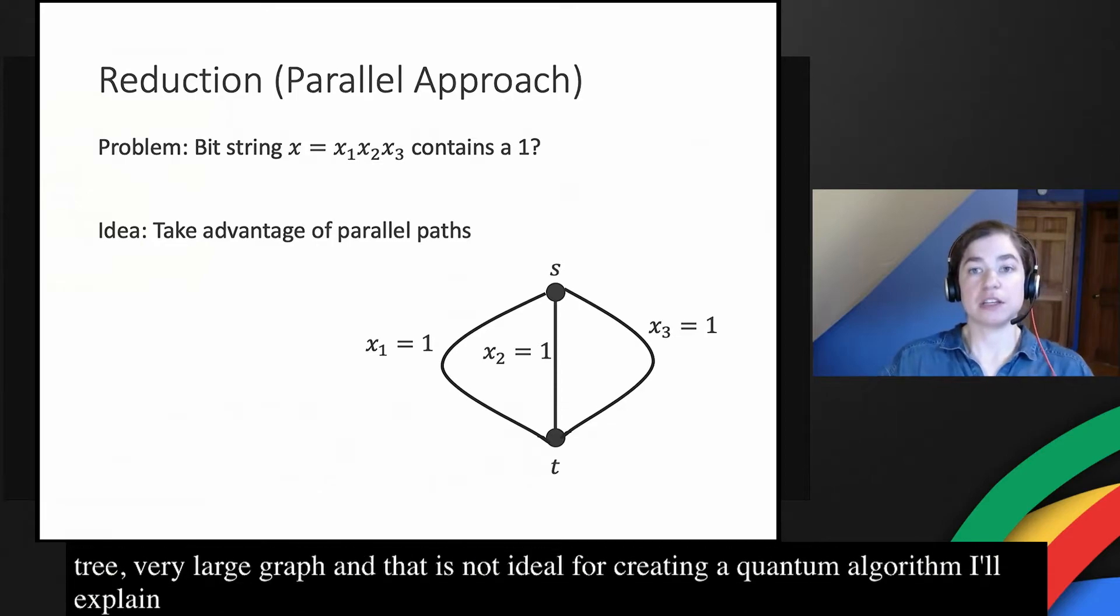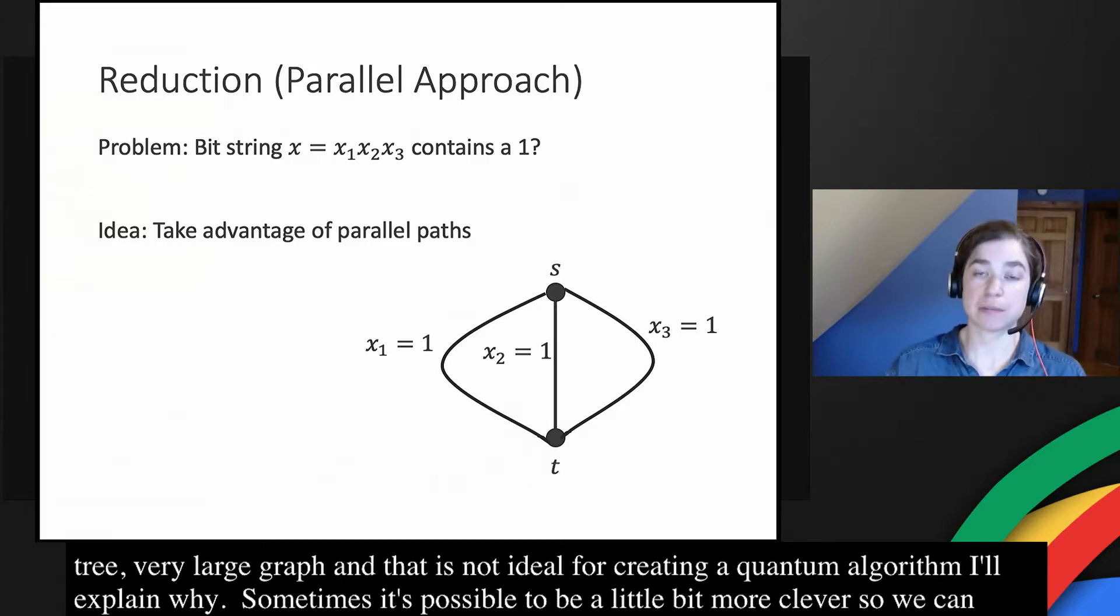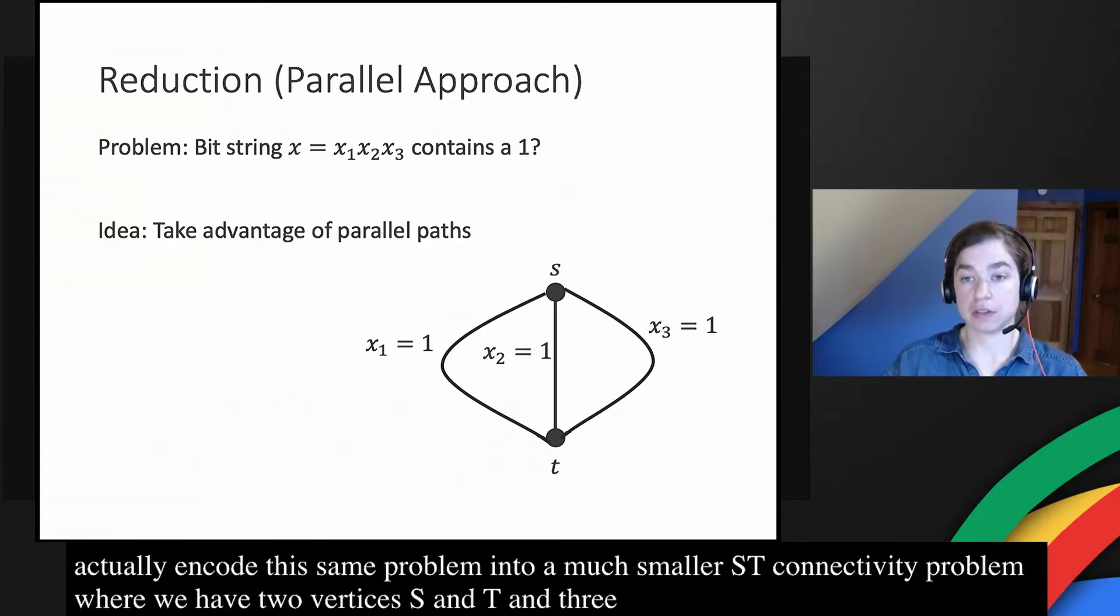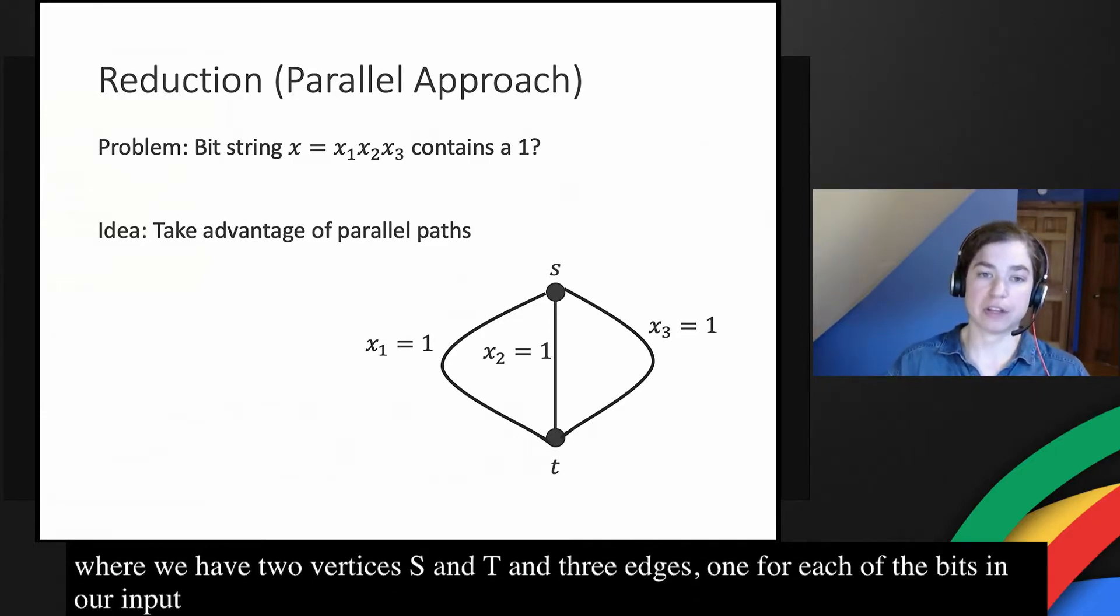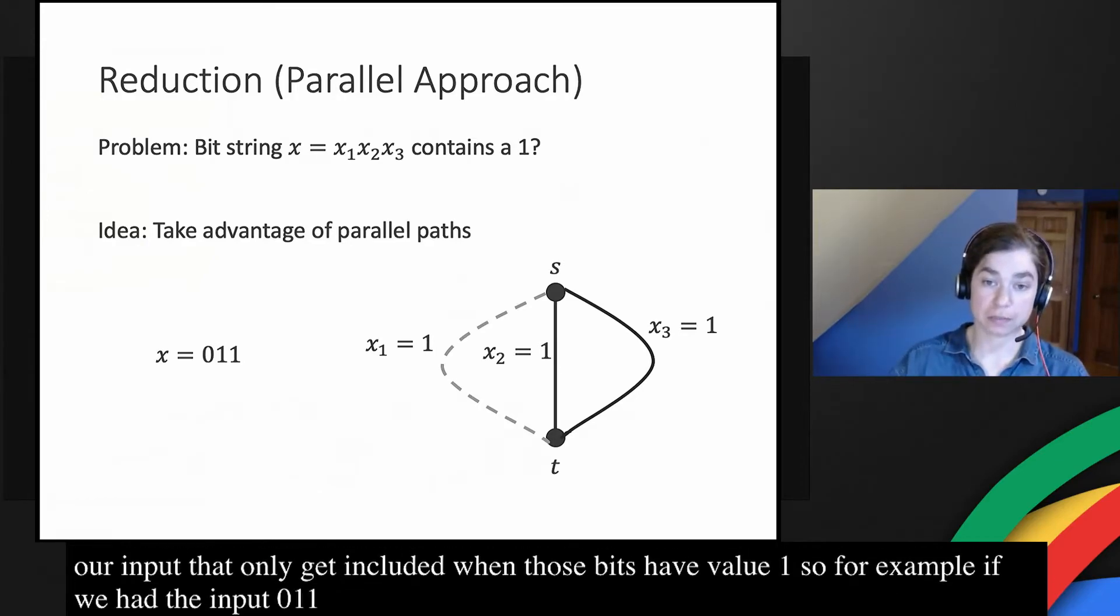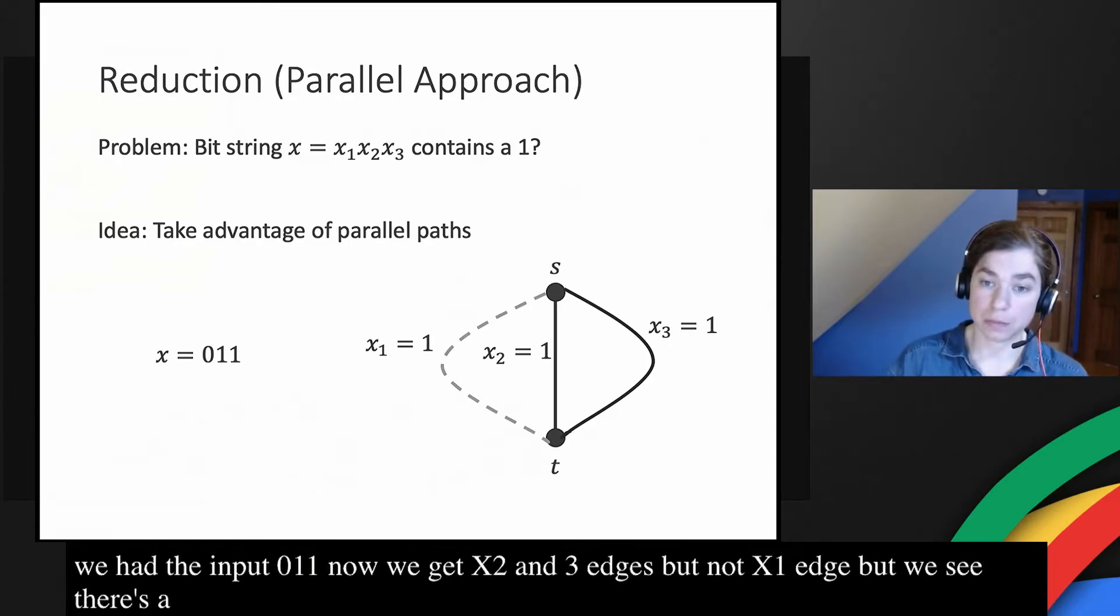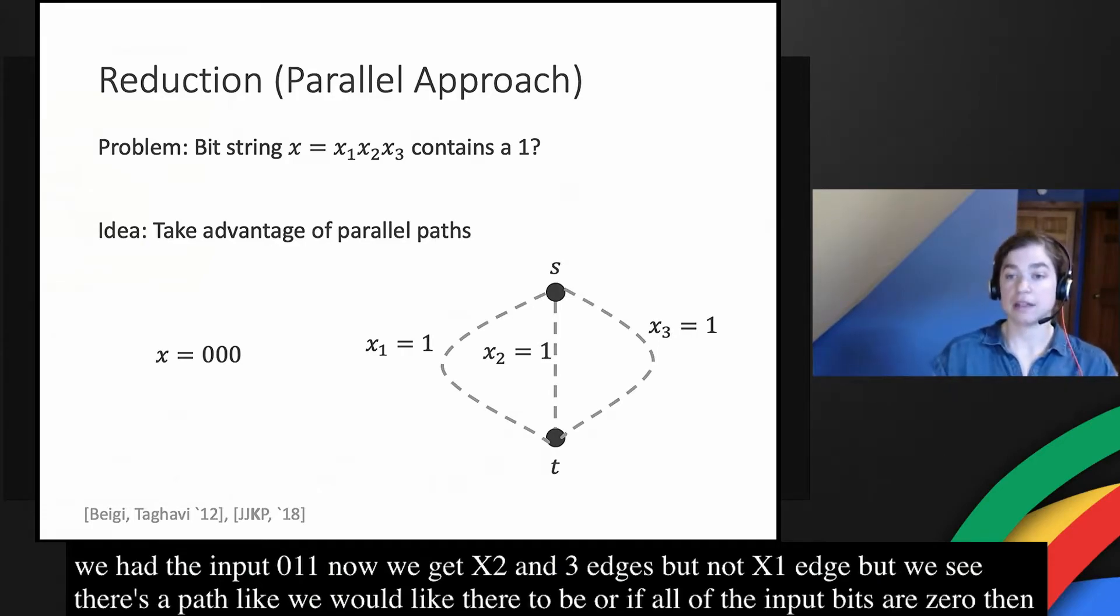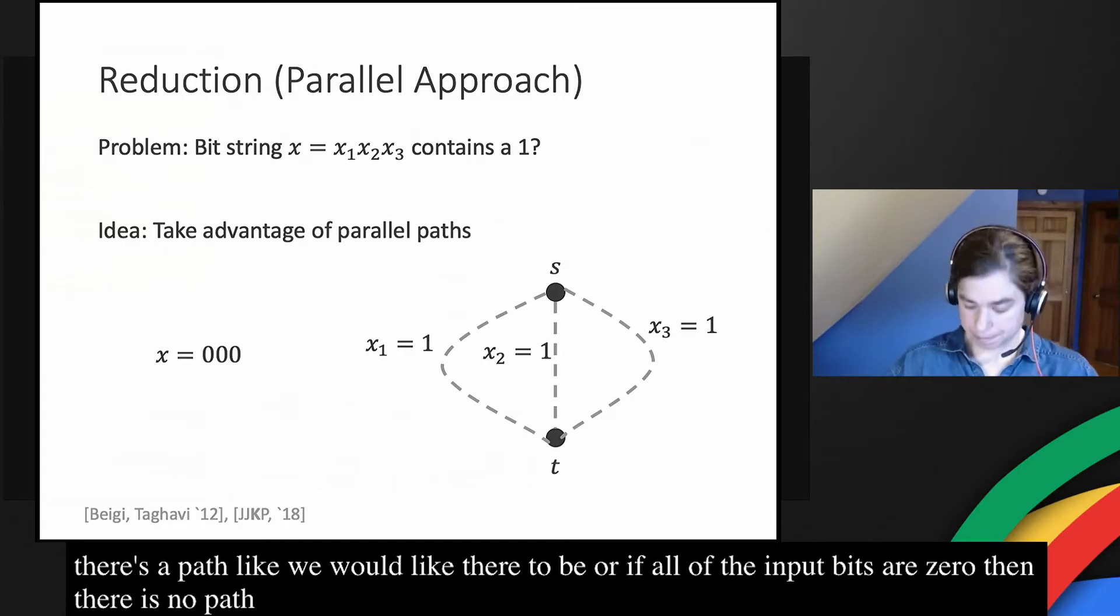Sometimes, it's possible to be a little bit more clever. We can actually encode this same problem into a much smaller ST connectivity problem where we just have two vertices s and t, and three edges, one for each of the bits in our input that only get included when those bits have value one. So for example, if we had the input 011, now we get the x2 and x3 edges, but not the x1 edge. But still, we see that there's a path just like we would like there to be since there's a one in the input bit. Or if all of the input bits are zero, then there is no path.